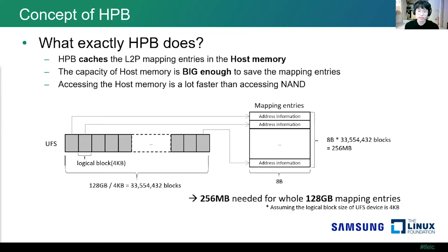HPB caches the mapping entries only. Through the specification, HPB allows 8-byte address information as a mapping entry for each logical block. So the total memory usage for mapping entries will be 8 multiplied by 33 million bytes — approximately 256 megabytes. So caching all the mapping entries for a 128-gigabyte total storage uses only 256 megabytes of host memory space.